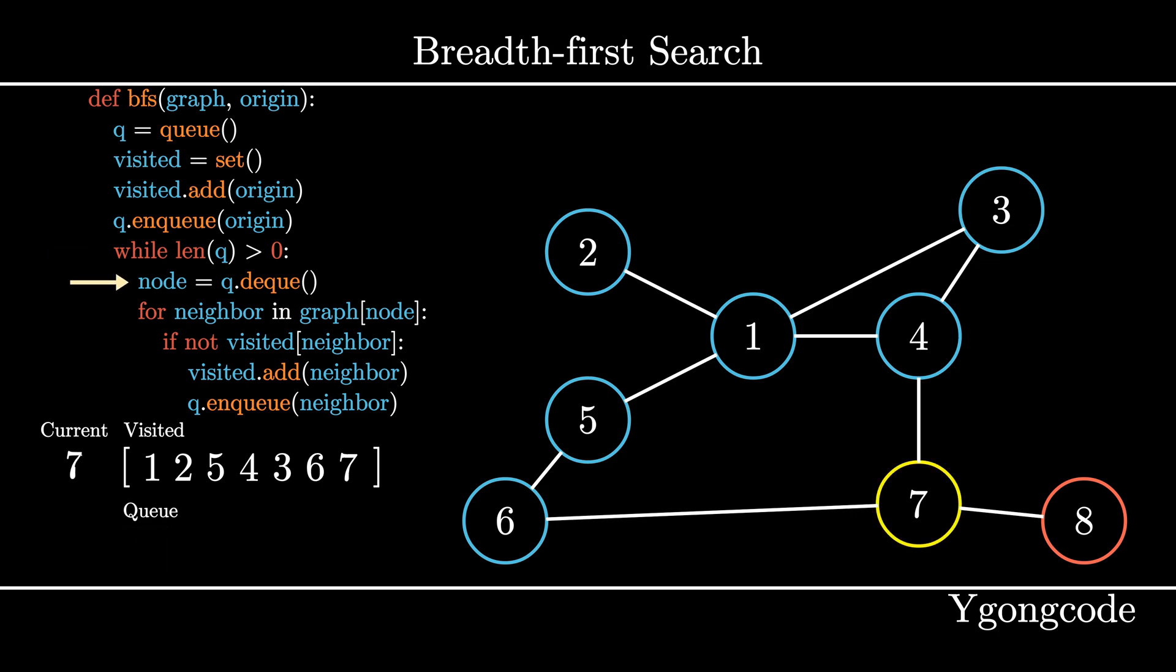At node 7, we see that we have a new neighbor, 8, that is non-visited, so we mark it as visited and push it into the queue.